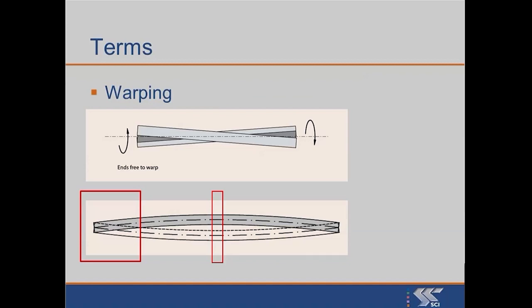That obviously is going to lead to a twist because if you look at the center line of this beam, mid-span, then one flange has gone in one direction, the other flange has gone in the other direction, and that means we've got a considerable twist.